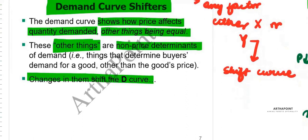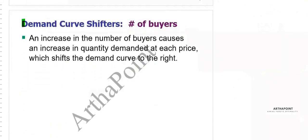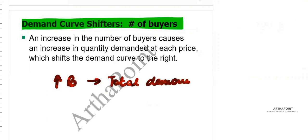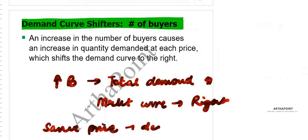Let's take the first example: the number of buyers. When there is an increase in the number of buyers, automatically the total demand in the market will increase, so the market demand curve will shift to the right. At the same price, you will demand more.